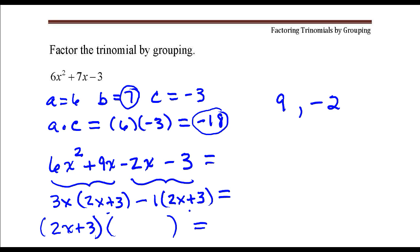So if I factor 2x plus 3 out of this first part, I'm left with 3x, and if I factor it out of the last part, I'm left with minus 1.